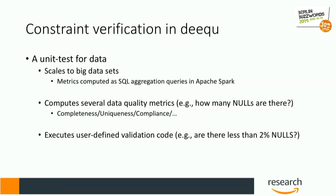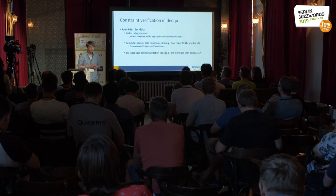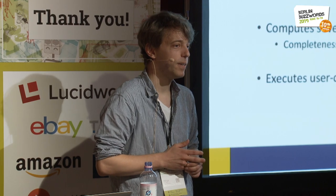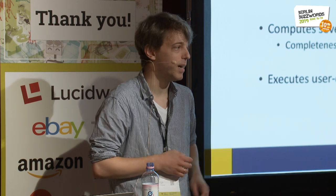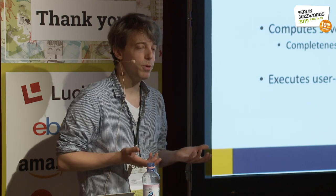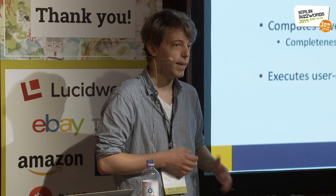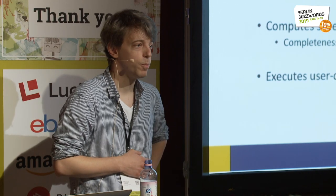A typical unit test in DQ obviously has to scale to big datasets, which is why we used Apache Spark. Most of our metrics are formulated as SQL aggregation queries over the data. Nothing in DQ's design ties us particularly to Spark — you could plug in any SQL-compliant backend that supports user-defined aggregation functions. It computes one or several data quality metrics; for example, you might be interested in how many nulls are in a particular column — that would be the completeness metric. Then given those computed metrics, you apply your user-defined validation code, asserting whether, say, 2% missing values is acceptable to you as an engineer.